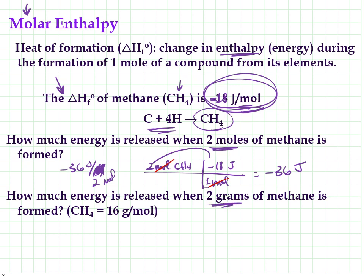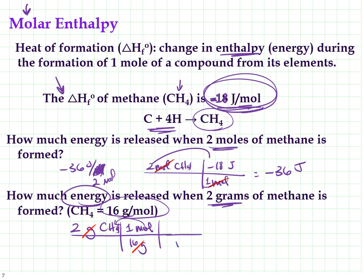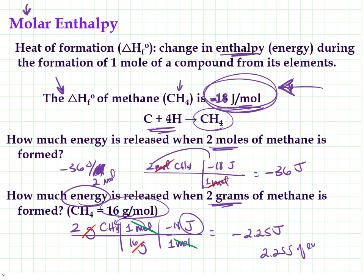How much energy is released when two grams of methane is formed? We have to do some mole conversions. I start with 2 grams of methane. Methane has a molar mass of 16 grams per one mole — I put grams on the bottom so they cancel out. Now I have moles of methane, but I want energy. I put moles on the bottom and negative 18 joules per one mole on top. Moles cancel, leaving joules. The math: 2 divided by 16 times negative 18 gives a final answer of negative 2.25 joules. We can say 2.25 joules of energy is released, or that delta H equals negative 2.25 joules.